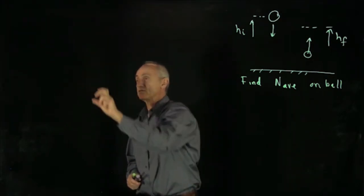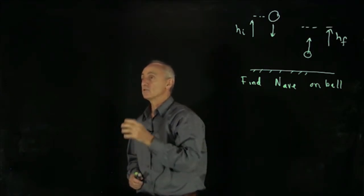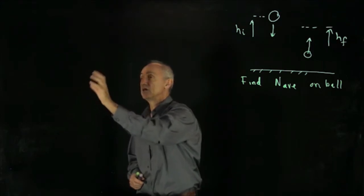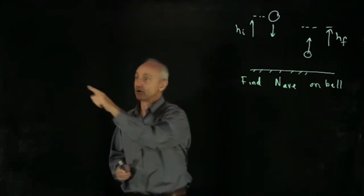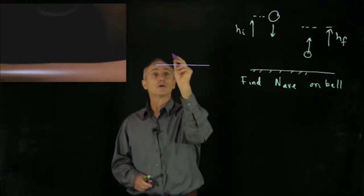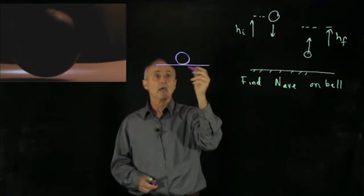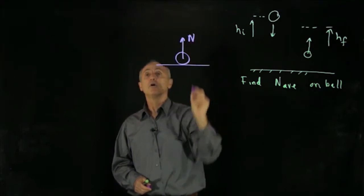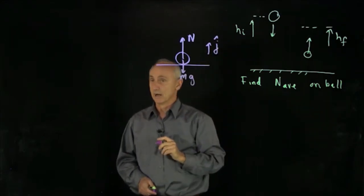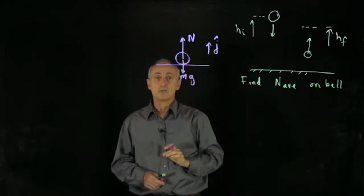Looking at the collision in slow motion, as the ball collides with the ground it compresses, then expands as it goes upward. We can draw a free body diagram on the ball with a normal force and a gravitational force. Choosing positive direction up, we now apply the momentum principle to analyze the average normal force.